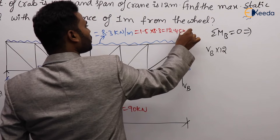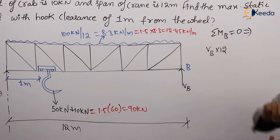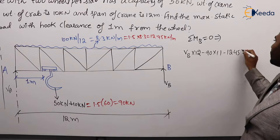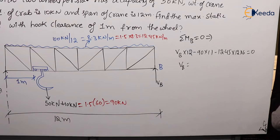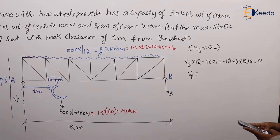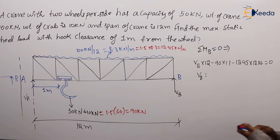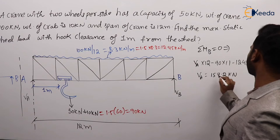Taking moments about B equals zero: VA × 12 = 90 × 11 + 12.45 × 12 × 6. Using a calculator: (12.45 × 12 × 6 + 90 × 11) divided by 12 gives VA = 157.2 kilonewtons. This is the reaction at support A.